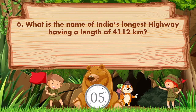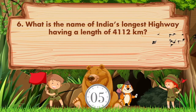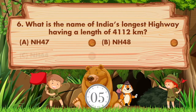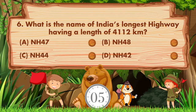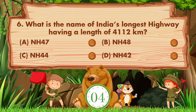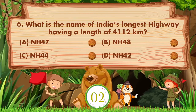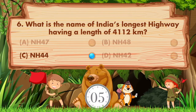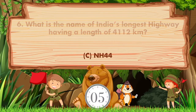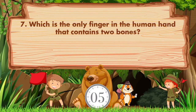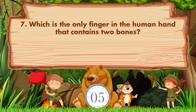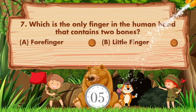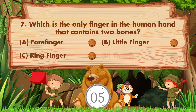Answer is option A, Keeker. What is the name of India's longest highway having a length of 4112 kilometers? Option A: NH47, B: NH48, C: NH44, D: NH42. Answer is option C, NH44. Which is the only finger in the human hand that contains two bones? Option A: Four finger, B: Little finger, C: Ring finger, D: Thumb.